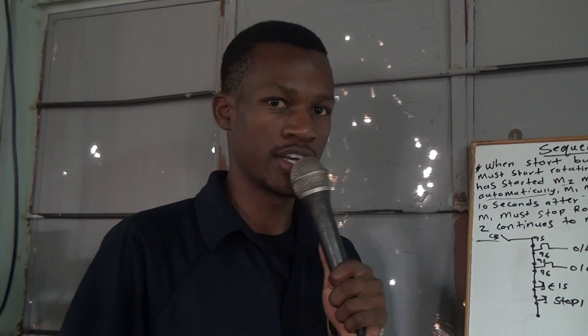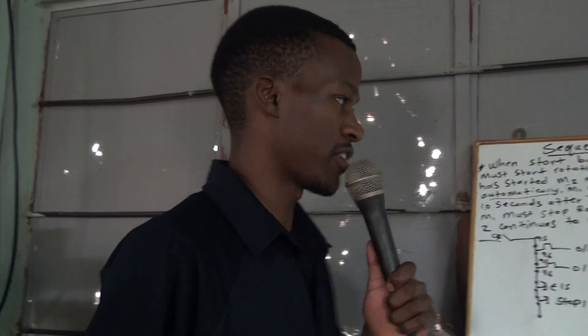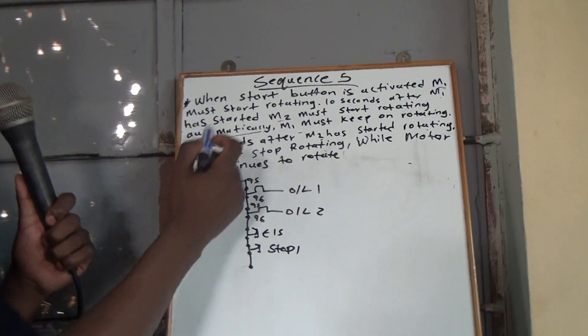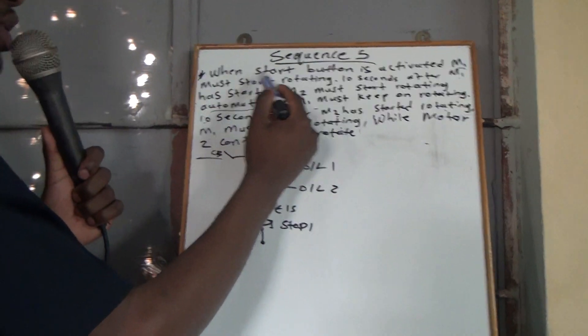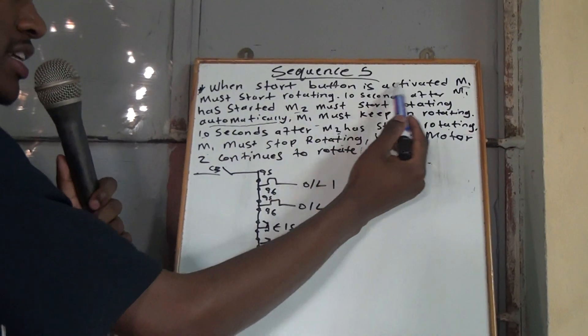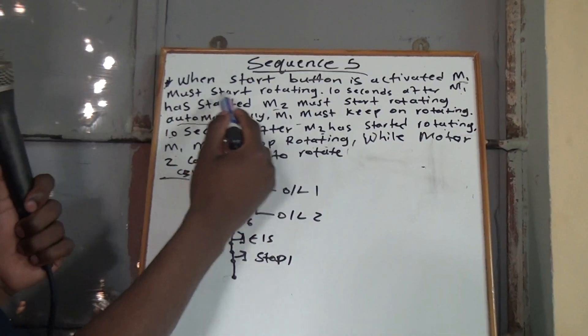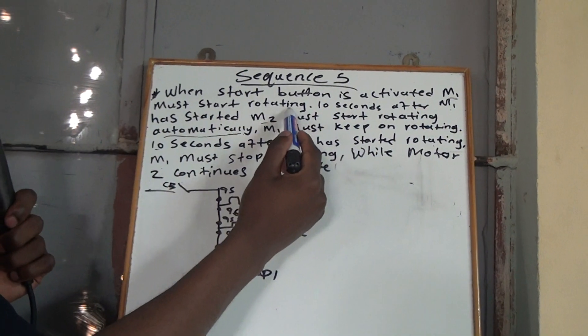Hey guys, welcome to Collegiate Engineering with Bungani Gumbede. Today we'll be doing Sequence 5. Sequence 5 says that when the start button is activated, Motor 1 must start rotating.